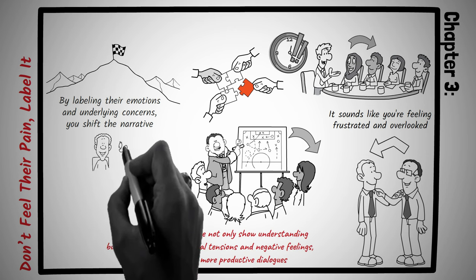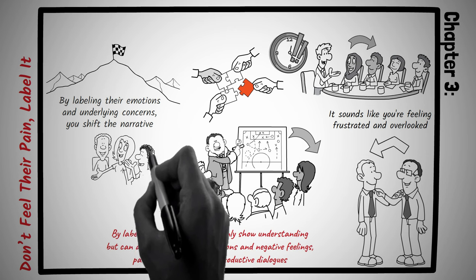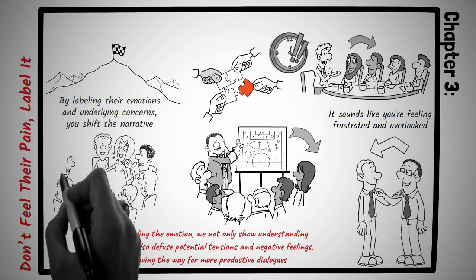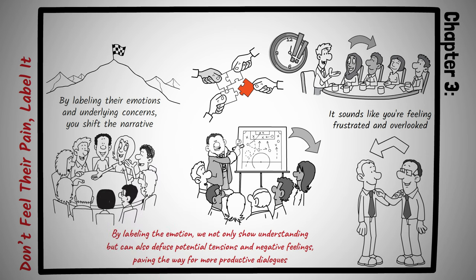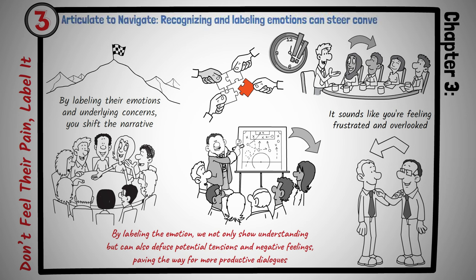In the intricate dance of human interactions, where emotions can either become barriers or bridges, the power of labeling stands out. It's a subtle technique, but has the potential to transform confrontations into conversations and misunderstandings into mutual respect. Principle number three is articulate to navigate. Recognizing and labeling emotions can steer conversations towards understanding and resolution.